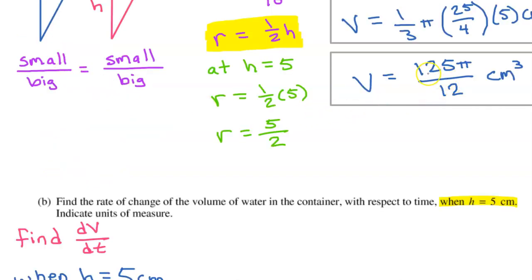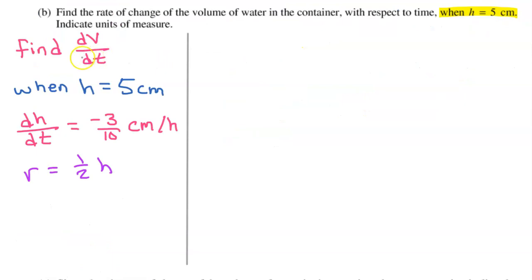We also learned that the volume was 125 pi over 12 at a height of 5. But I don't think we're going to need that fact. But if you wanted to write it down, it wouldn't hurt. We are being asked to find dV/dt, the rate of change of the volume.